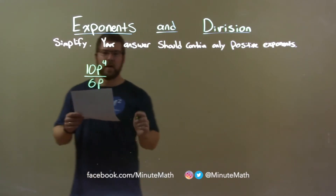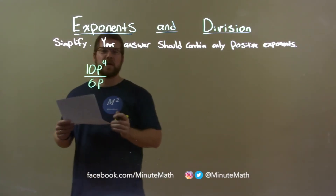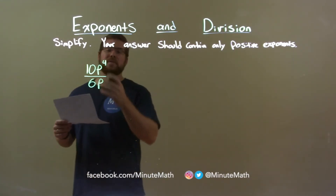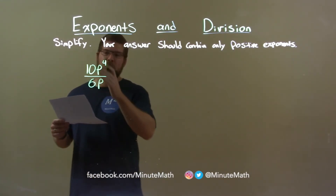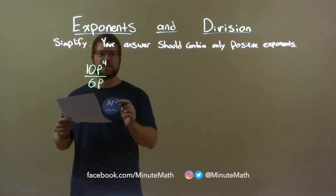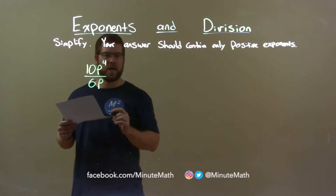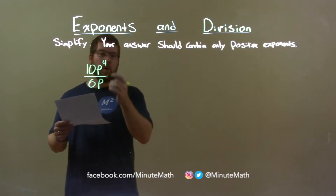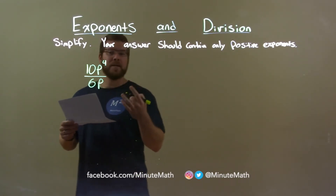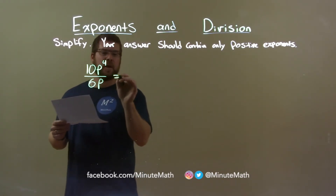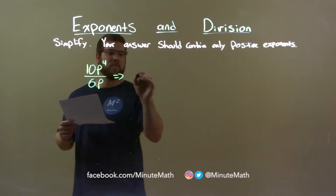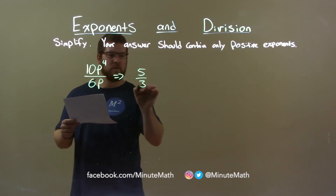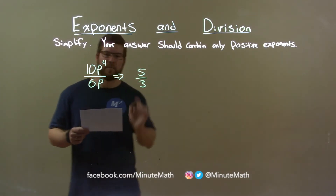The first thing I'd like to do is look at the coefficient. I have 10 over 6. That fraction can simplify — they're both divisible by 2 — and so we can write this to be 5 thirds.